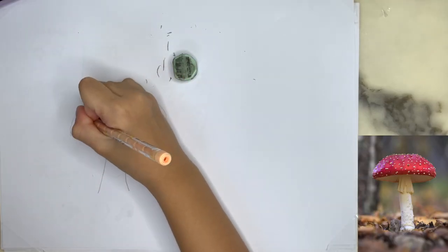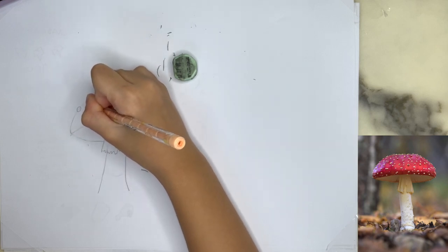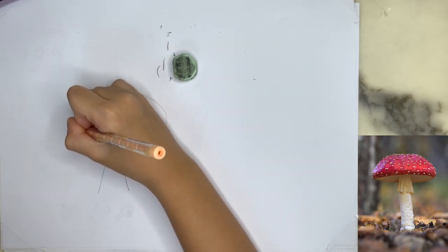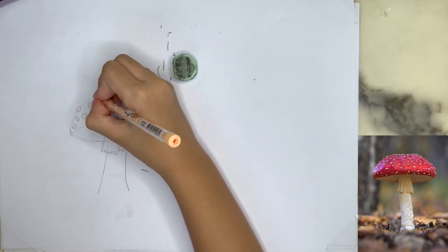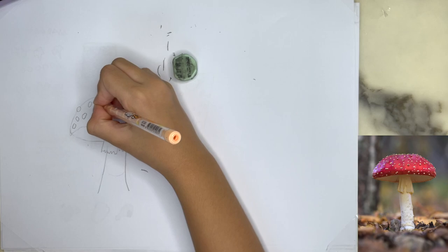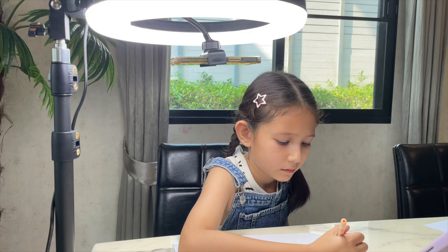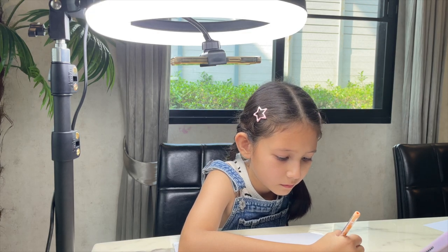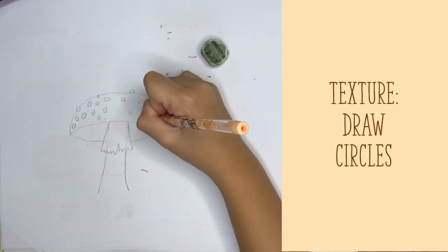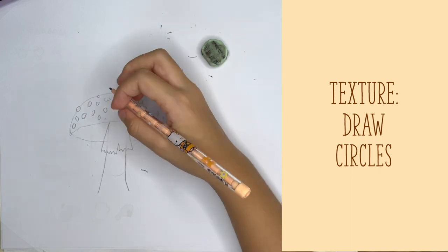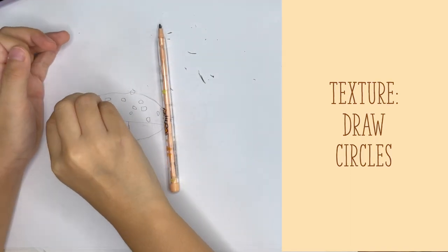In step number two, we are going to do much of the same as in step one, but this time we will add texture and pattern. Again, we are going to use basic and simple shapes. Selena is blocking a little bit with her hand there, but you can see that she's about to finish up with the spots on the mushroom. All she does is draw circles that are naturally unsymmetrical.